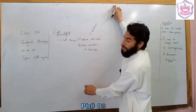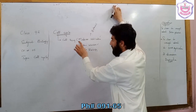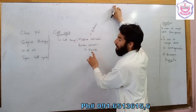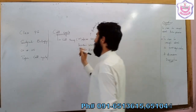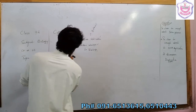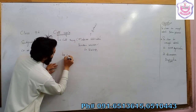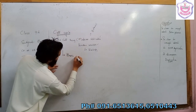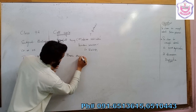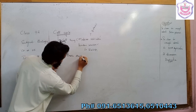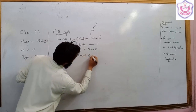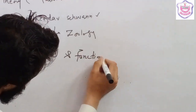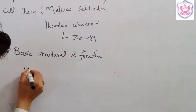According to the cell theory, the cell is the basic structural and functional unit of all organisms. It is the basic structural and functional unit of all organisms.